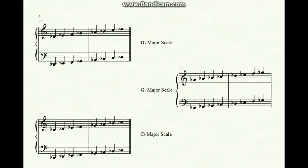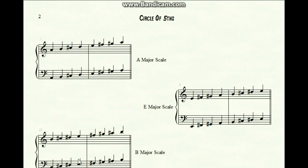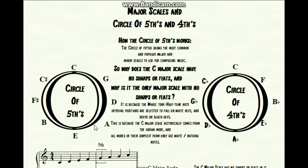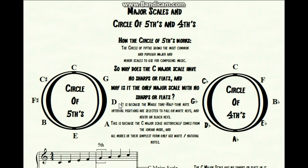If you notice, there's a pattern. The circle of sharps goes C, G, D, A, E, B, F sharp, and C sharp. The circle of flats — the circle of fourths — is basically the reverse: F, B flat, E flat, A flat, D flat, G flat. It's sort of backwards, but that's basically it.